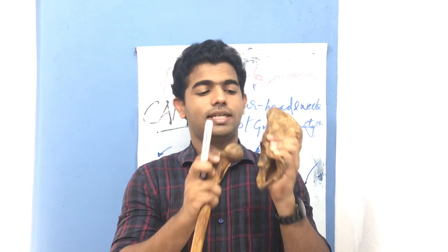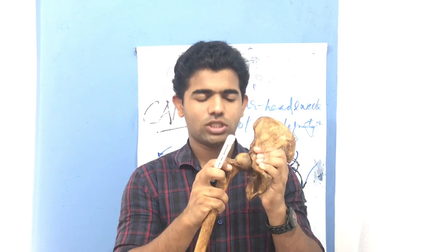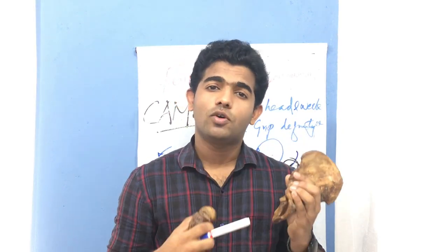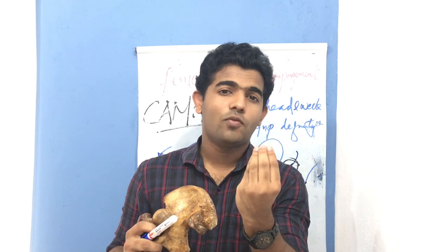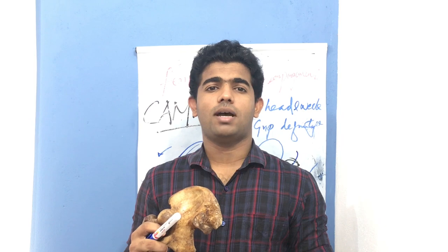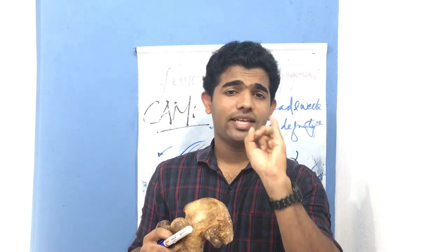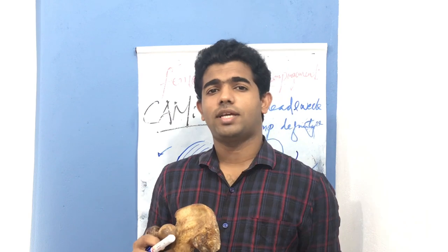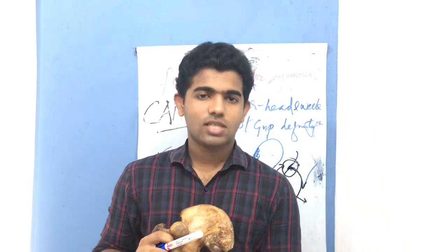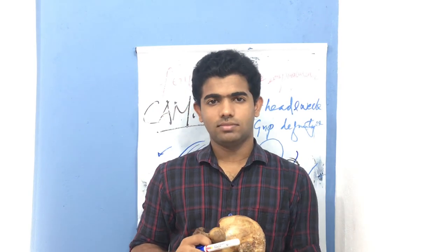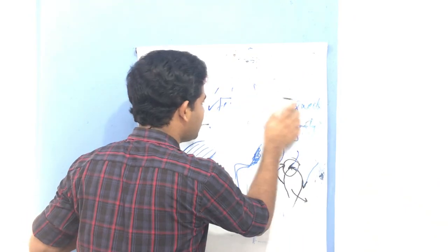To summarize cam impingement: the adverse effects include damage to the labrum, damage to the articular cartilage — which can become soft, a condition called malacia — and degenerative changes such as fibrillation. Most importantly, remember there will be pain, restricted range of motion classically occurring in greater degrees of flexion and abduction, damage to cartilage and labrum, and pain when getting up after prolonged sitting. We now move on to pincer impingement.